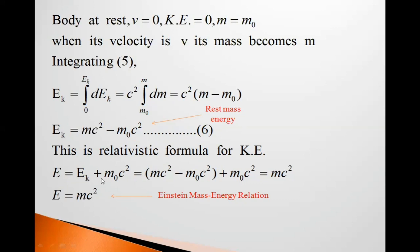E is equal to Ek plus m0 c square. So Ek means this mc square minus m0 c square plus this m0 c square. So it will get cancelled. So we get E is equal to mc square. E is equal to mc square. And this is Einstein mass-energy relation.